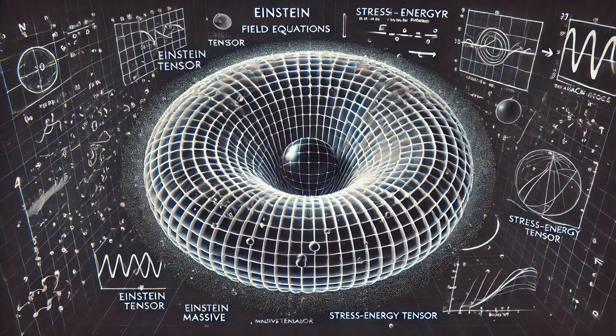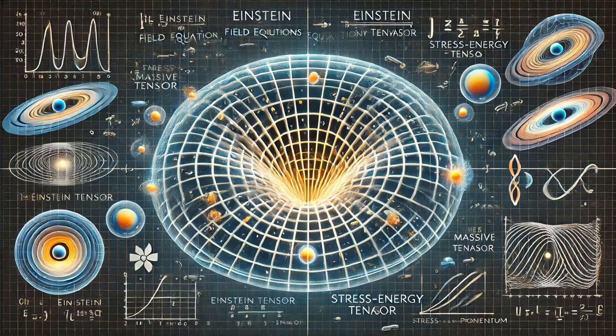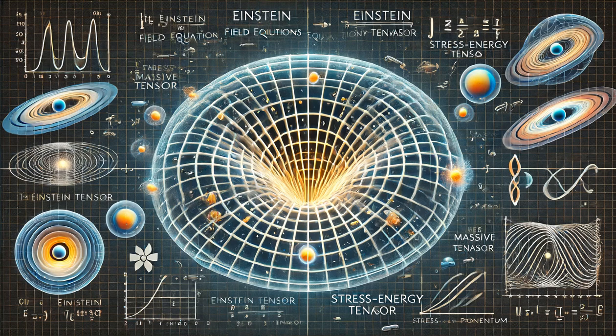The Einstein tensor encompasses the curvature of spacetime and is derived from the Ricci-curvature tensor and the metric tensor. The stress-energy tensor describes the density and flow of energy and momentum in spacetime.